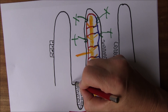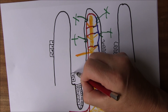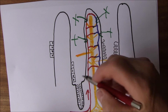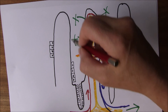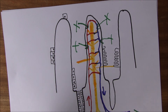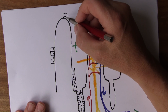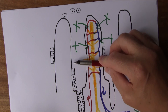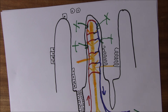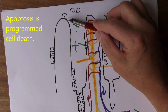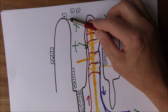Cells divide in the crypts and migrate up onto the mucosa lining the villi. A cell at the base may be 12–24 hours old, while a cell near the top is about four days old. Eventually the cells reach the apex, undergo apoptosis, and flake off into the lumen. This layer is constantly being replaced, with a continuous flow of cells from the base to the apex of the villi, constantly renewing the mucosa.